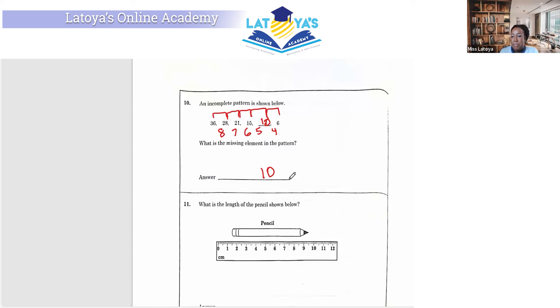What is the length of the pencil shown? Well, it starts from 1.5. So we can go from this point to this point. Here to here is 1, here is 2, here is 3, here to here is 4, 5, 6, 7, 8. So the answer is going to be 8 centimeters.